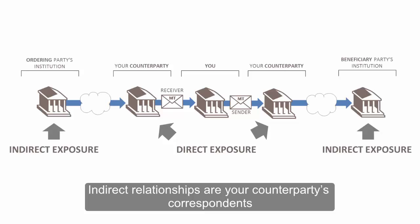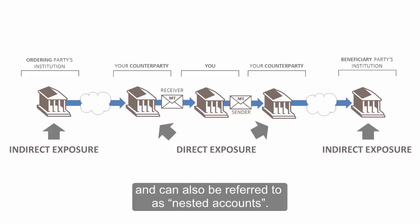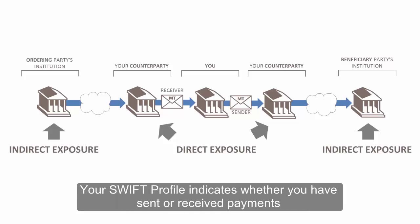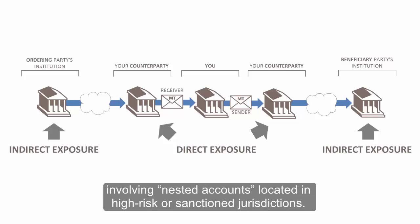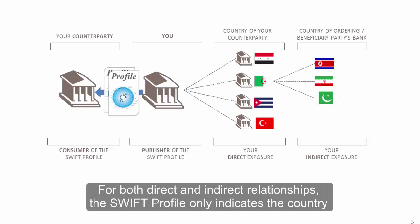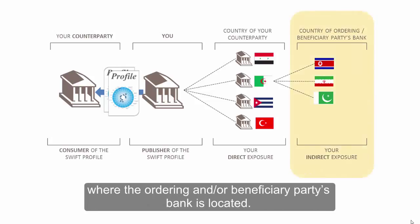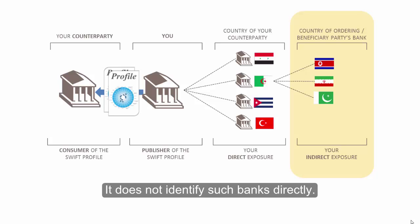Indirect relationships are your counterparty's correspondents and can also be referred to as nested accounts. Your SWIFT profile indicates whether you have sent or received payments involving nested accounts located in high-risk or sanctioned jurisdictions. For both direct and indirect relationships, the SWIFT profile only indicates the country where the ordering and/or beneficiary party's bank is located. It does not identify such banks directly.